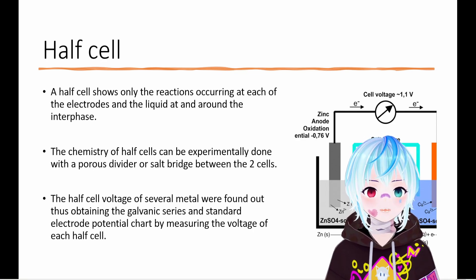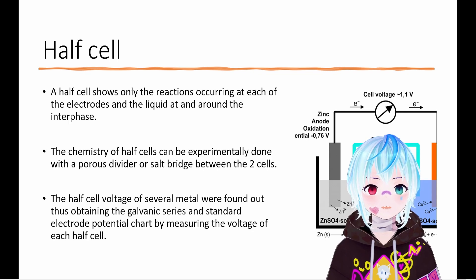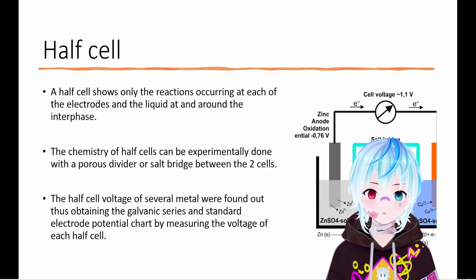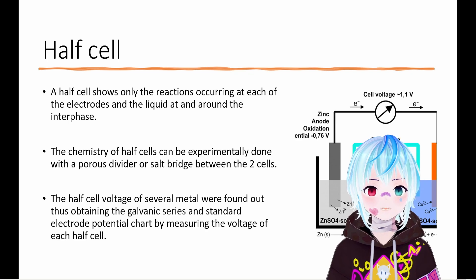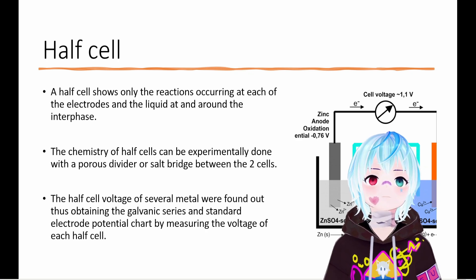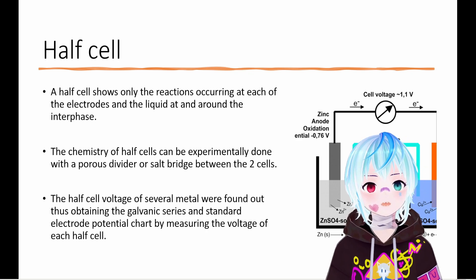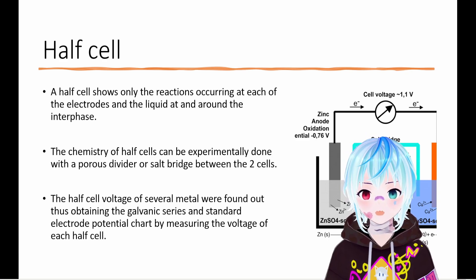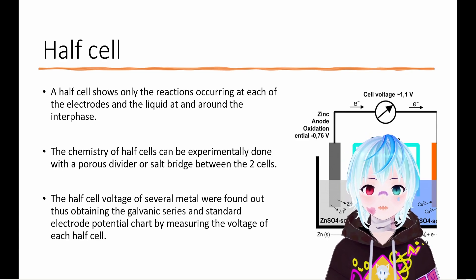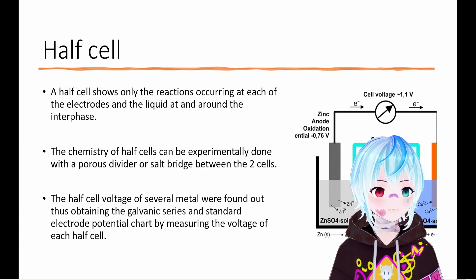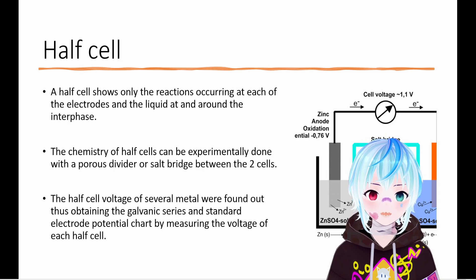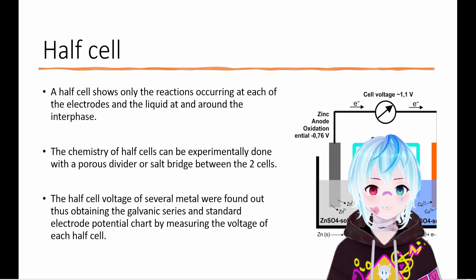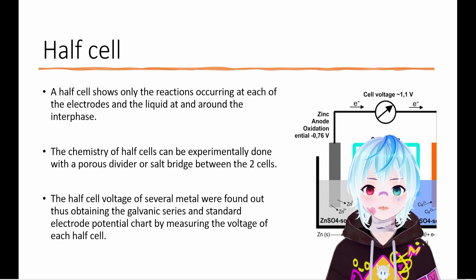The half cell reactions occur around the electrodes in their individual chambers, and can be observed physically by a distinct color change between the two cells after some time, or quantitatively by inserting a standard hydrogen electrode in each of the chambers and measuring their voltage.